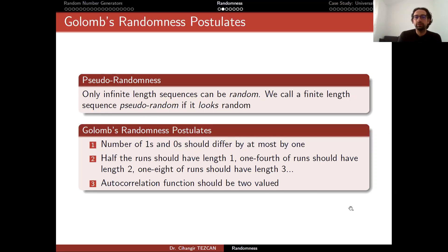And finally, autocorrelation function should be two-valued. So these are Golomb's postulates.